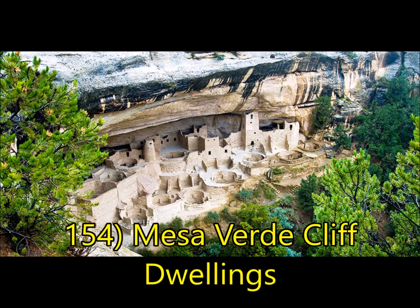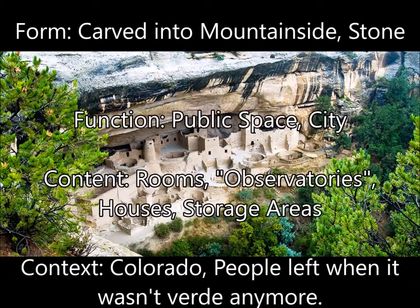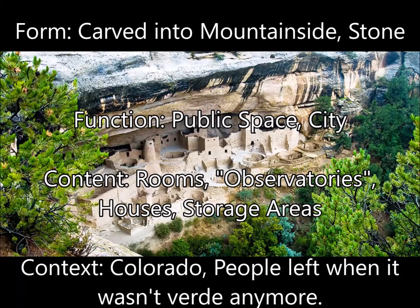Next you have the Mesa Verde cliff dwellings, located in Colorado. These are stone buildings that are carved out of the cliff side but also built onto it. For function, you need to know this is a public space, a city where people would actually be living — not a religious capital. This space is for everyone, not just the elite. We know that because of the kinds of rooms and artifacts found there, including the observatory, which is the highest spot in the city.